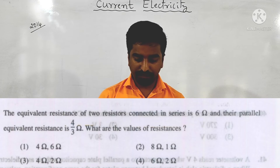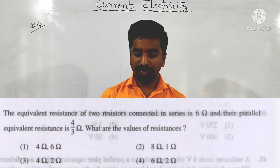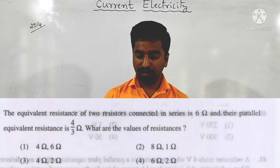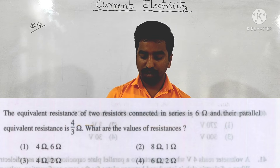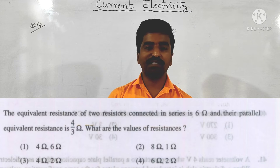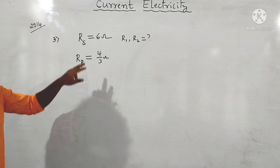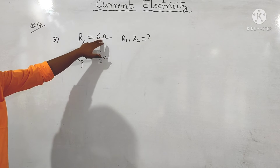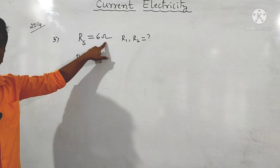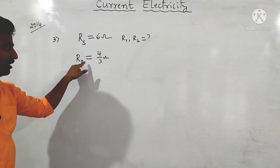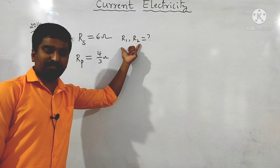Next question from the same year: the equivalent resistance of two resistors connected in series is 6 ohm, and their parallel equivalent resistance is 4/3 ohm. What are the values of the individual resistances? Let's move on to the solution.